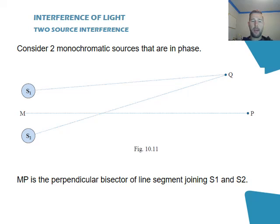Now this line MP in our drawing here represents a perpendicular bisector, with the bisector being this line at this point, and perpendicular meaning right angles there. So that means every point along this line MP is equidistant from both S1 and S2.